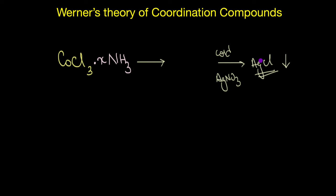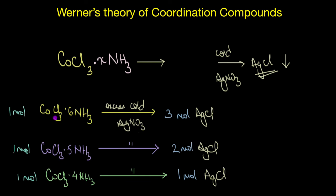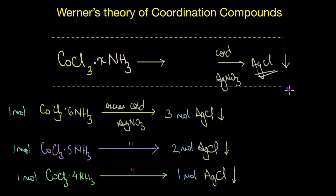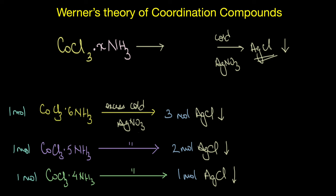This means some compounds of cobalt chloride with ammonia had ionizable chloride ions which precipitated as AgCl, but some did not. For example, one mole of CoCl3·6NH3 (yellow) reacted with excess cold silver nitrate solution gave three moles of AgCl. One mole of CoCl3·5NH3 gave only two moles of AgCl. And one mole of CoCl3·4NH3 (green) gave only one mole of AgCl. Conductivity studies performed on these compounds showed similar results.